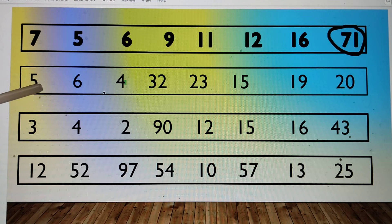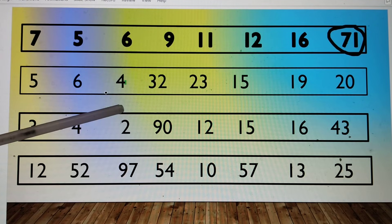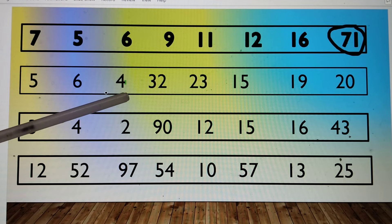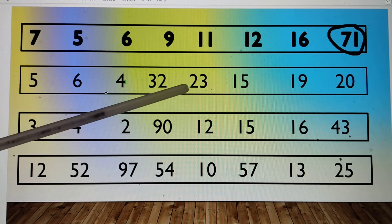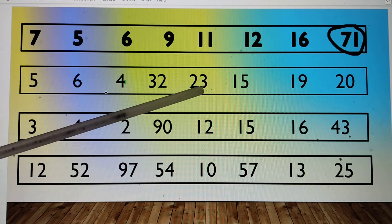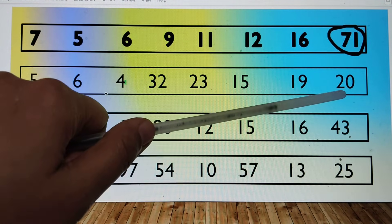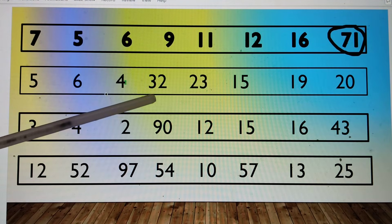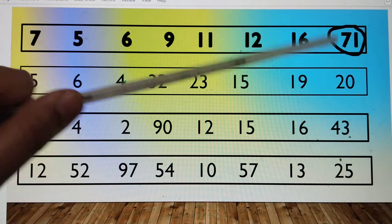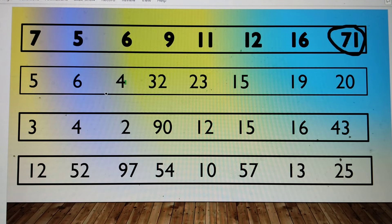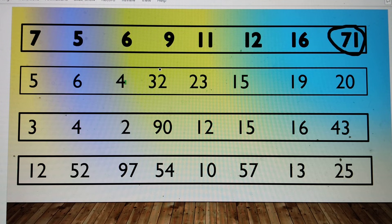In the next series, we have number 5, number 6, number 4, number 32, number 23, number 15, number 19, number 20. There are many double digit numbers, but we have to look for the biggest one. This number begins with 3, so this is the biggest number.